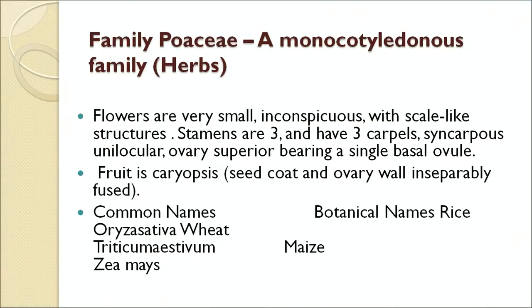The next monocotyledonous family is Poaceae. Plants are herbs or rarely woody, as in sugarcane. Inflorescence is a spike of spikelets, for example wheat. A small spikelet may contain not more than 5 flowers. Flowers are very small, inconspicuous, with scale-like structures. Stamens are 3, sometimes 6 as in rice and bamboo. Three carpels are present in a syncarpous unilocular superior ovary bearing a single basal ovule. Fruit is a caryopsis, where the seed coat and ovary wall are inseparably fused. Examples include rice, wheat, maize, sugarcane, barley, and bamboo.